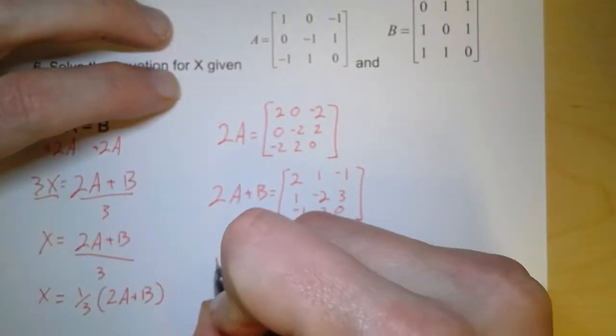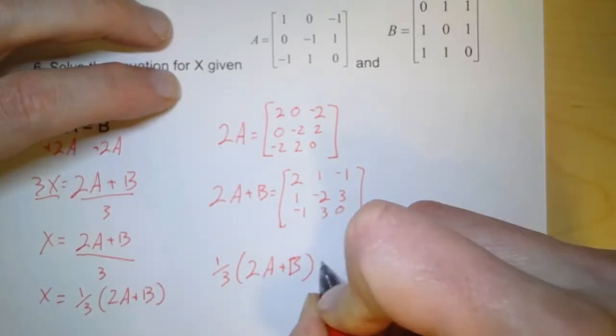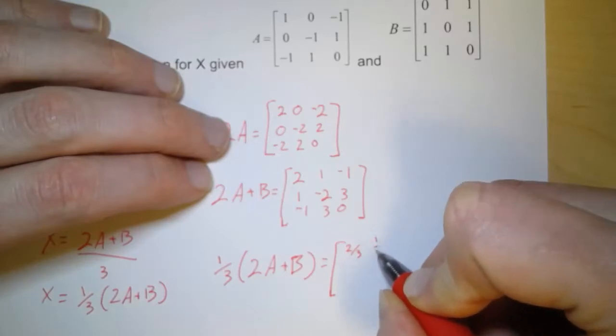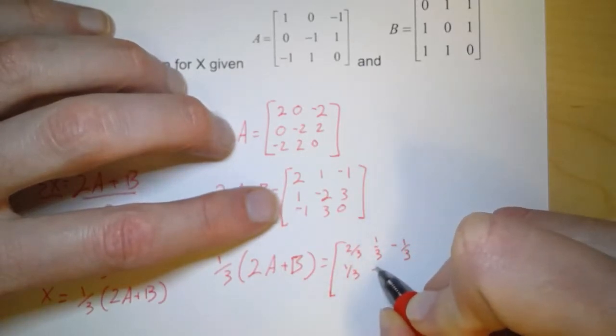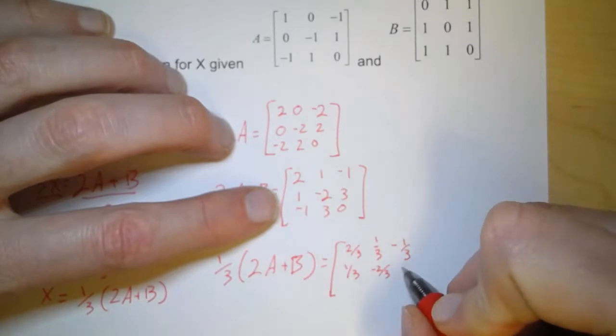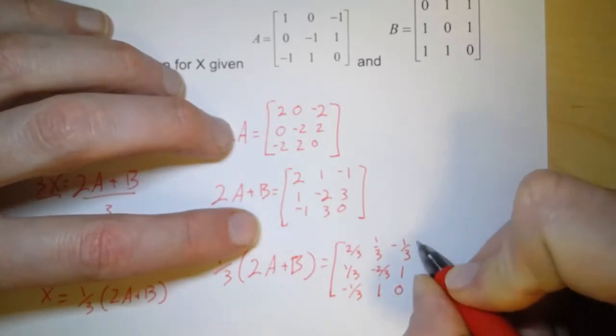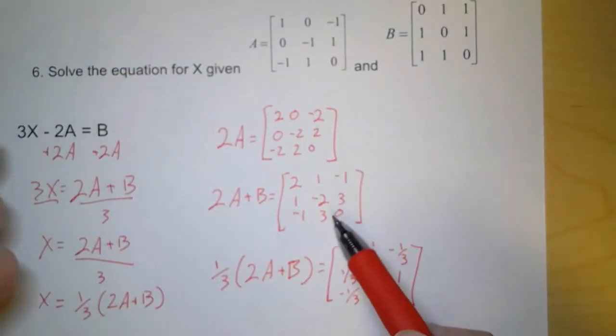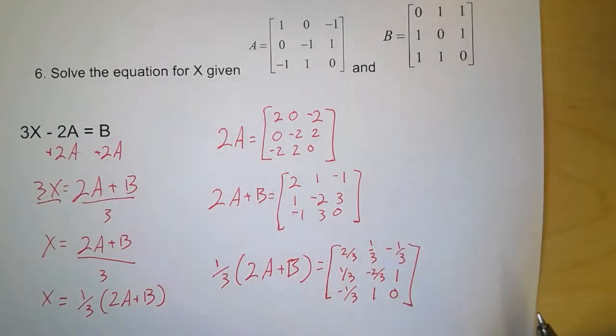So now, finally, I need to multiply this whole quantity by 1 third. So all I'm going to do is I'm going to take what I found and multiply all these numbers by 1 third. So we have 2 thirds. We have 1 third. Negative 1 third for the first row. For the second row, 1 third. Negative 2 thirds. 1. For the last row, negative 1 third. 1 and 0. So every value here in this matrix got multiplied by 1 third. And with the exception of 3s and 0s, we ended up with fractions. And it's okay to have fractions in a matrix. A lot of people think you have to have whole numbers. No. Fractions are just numbers, or different forms of numbers, and they're equally valid in a matrix, too.